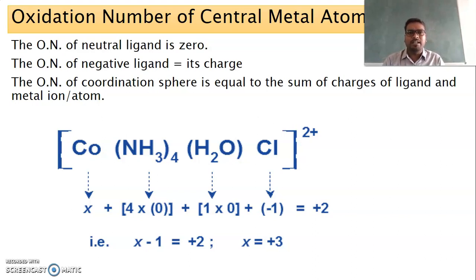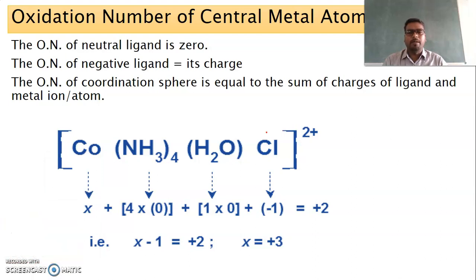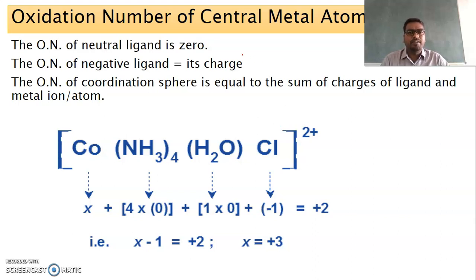You already know how to calculate the oxidation number of species in inorganic compounds — you studied a set of rules for calculating oxidation numbers of various metals and non-metals. In coordination chemistry, the same rules apply. However, you need to know some extra things in order to calculate the oxidation number of the central metal atom.